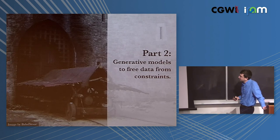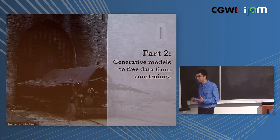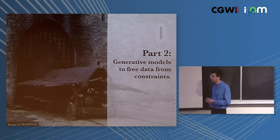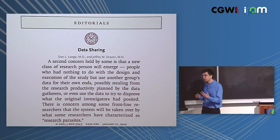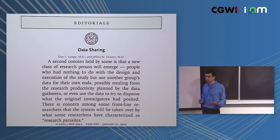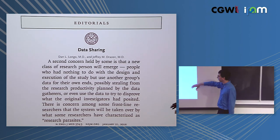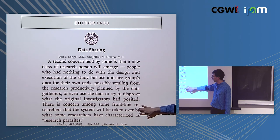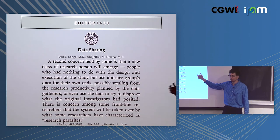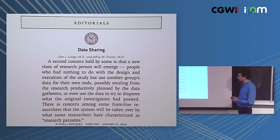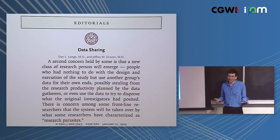The thing Anshul really thought I should talk about is how we can take data and essentially unlock it from silos using deep neural networks. This was motivated in part by an editorial in the New England Journal of Medicine. Dan Longo and Jeff Drazen included the idea that there are certain people who have been characterized as research parasites - people who use someone else's data to essentially do science. If you're in this room, you're a research parasite.